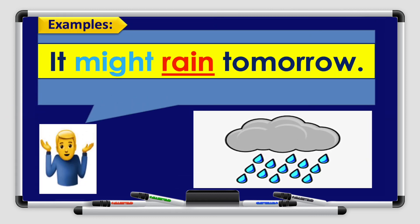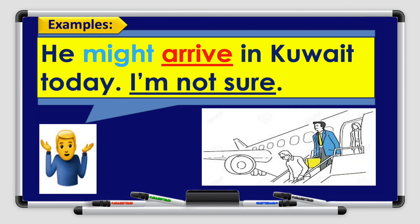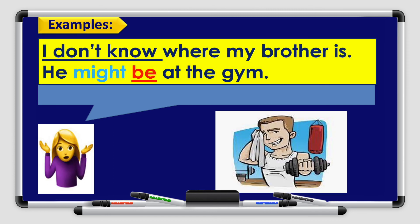Let's look at some examples. 'It might rain tomorrow' — I'm not sure, it might and it might not. 'He might arrive in Kuwait today' — I'm not sure, so we use the modal verb might with the verb in the infinitive form 'arrive.' 'I don't know where my brother is — he might be at the gym.' After might, we have to add the verb in the infinitive form.